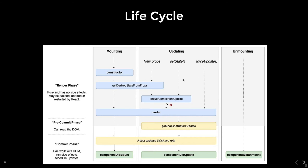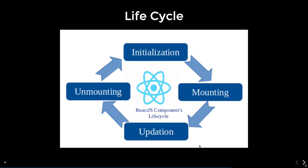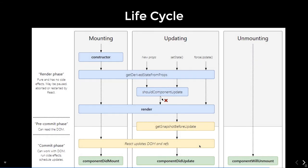Three things can trigger the update lifecycle: updating state, receiving new props from the parent component, or forcing an update. When new props arrive, the sequence is getDerivedStateFromProps, shouldComponentUpdate, then render. When updating state it is shouldComponentUpdate, render, getSnapshotBeforeUpdate, componentDidUpdate. When forcing, we skip shouldComponentUpdate and go directly to render, getSnapshotBeforeUpdate, and componentDidUpdate. Removing the component from the DOM triggers componentWillUnmount.